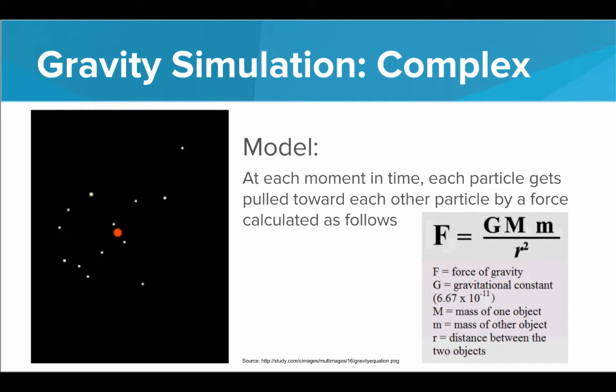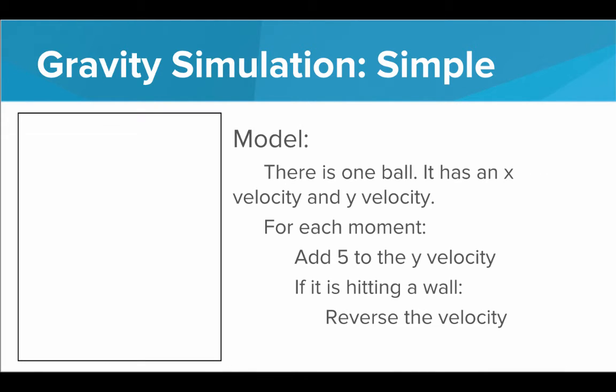And maybe that's what you need. Maybe you need that level of precision. But maybe you don't, because a much simpler model for gravity could be just there's a single ball and it's going to get pulled towards the ground. This is a very simple model of gravity. We're going to say instead of all these particles, there's just one and it has an x velocity and a y velocity, an x speed and a y speed. For every moment in the simulation, we're going to move it based on the velocity and then just add 5 to y, just add 5 to the positive y direction.